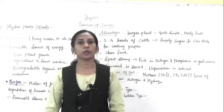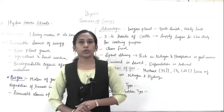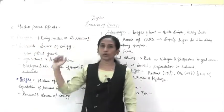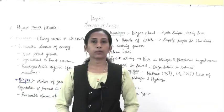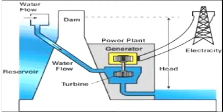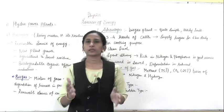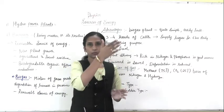What is a hydro power plant? The name itself suggests it is related to water. The plant is set up near a reservoir where water is present. A dam is prepared there; the dam acts as a barrier, and because of that, the level of water increases near the dam. As we know, flowing water has kinetic energy.